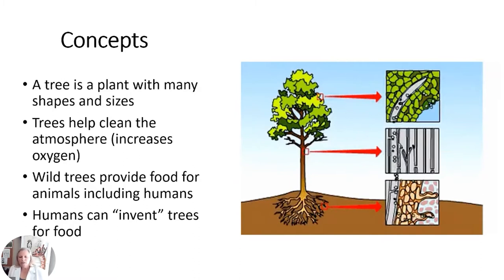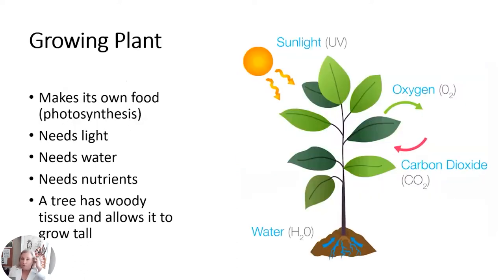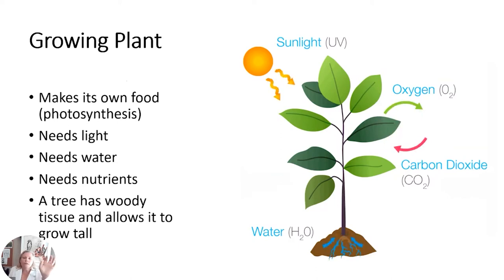Trees also need sunlight. As you walk around, notice the different types — see if you can find the tallest tree or the biggest tree around. We call those treasure trees. For a growing plant to grow, it needs sunlight. The sunlight gives UV light that the plant uses in its leaves to photosynthesize. Can you say 'photosynthesize'? All it means is that a plant can make its own food.